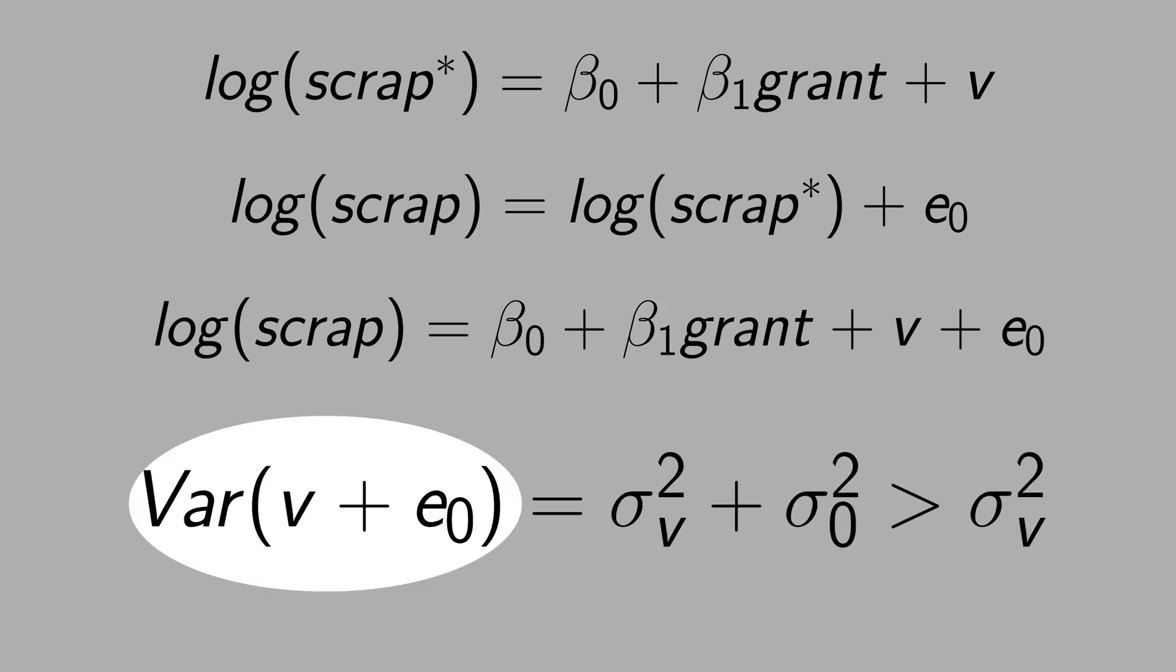See that the variance of the new error term that's composed by v and the measurement error is bigger than the original variance. Original variance, I mean the variance of the model without the measurement error. To get this equality here, we are assuming that the v and the measurement error are independent.